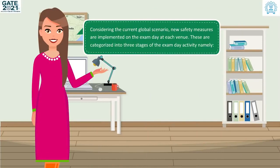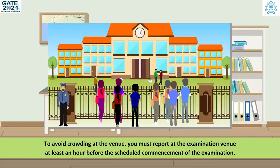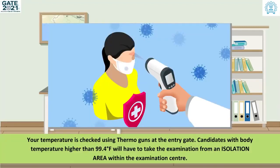Considering the current global scenario, new safety measures are implemented on the exam day at each venue. These are categorized into three stages of the exam day activity. Pre-examination preventive measures for COVID-19: to avoid crowding at the venue, you must report at the examination venue at least an hour before the scheduled commencement of the examination. Follow the rope cues and floor marks while standing in queue outside the gate. Your temperature is checked using thermoguns at the entry gate.